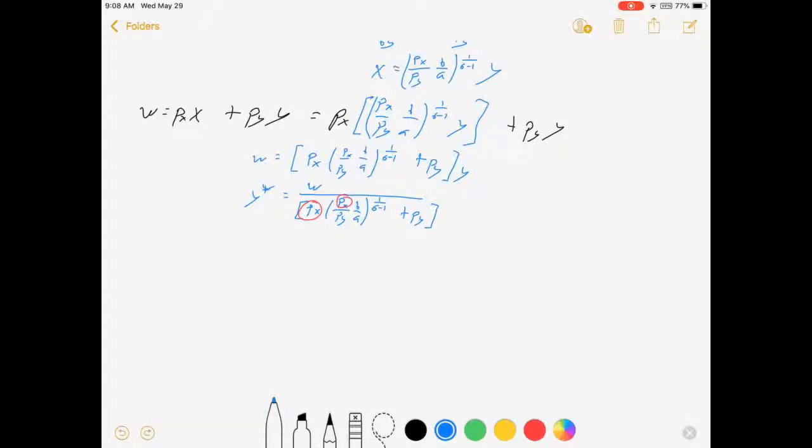So let's figure out how to do this. y star is equal to w over: px with no exponent is the same as px to the 1, and 1 plus 1/(σ-1) is σ/(σ-1). And that's going to be multiplied by (b/py·a)^(1/(σ-1)) plus py. All right, we've combined our x's.